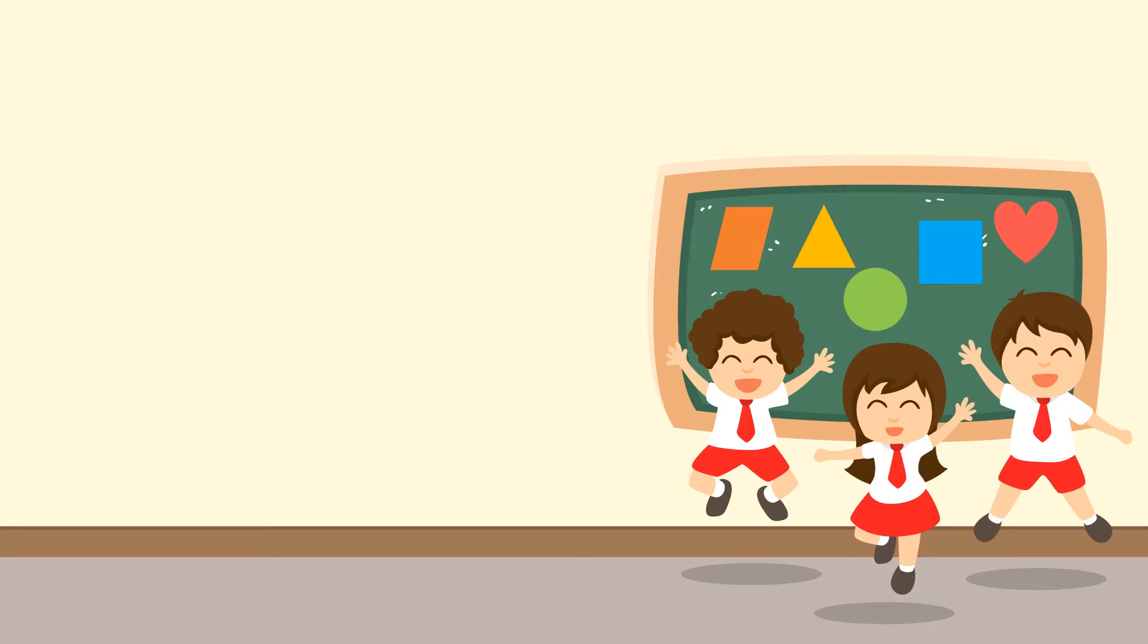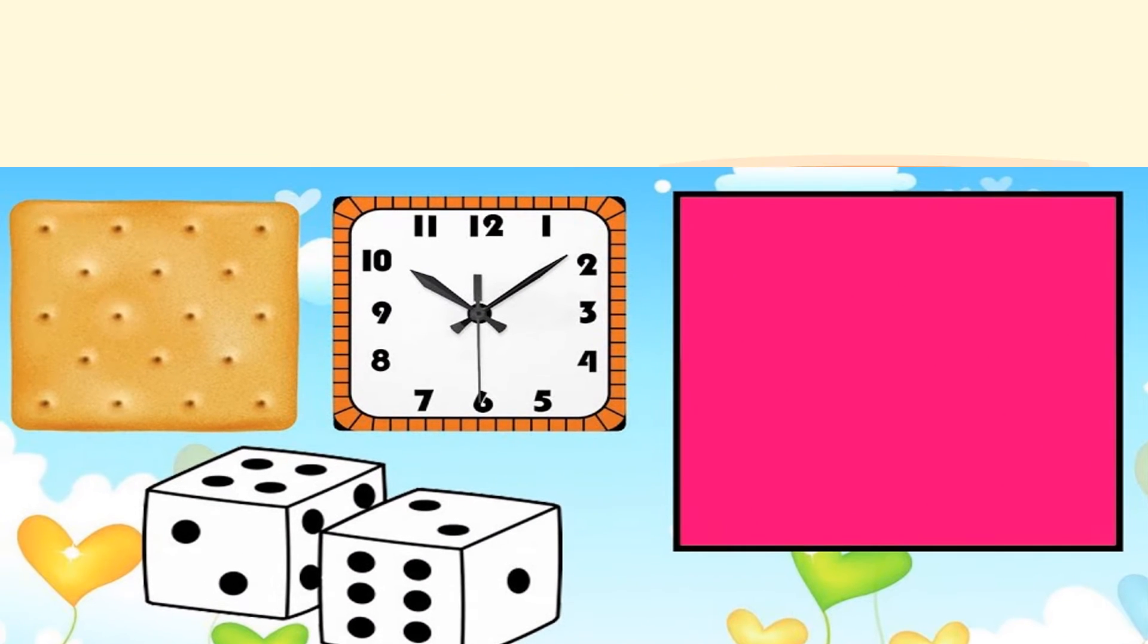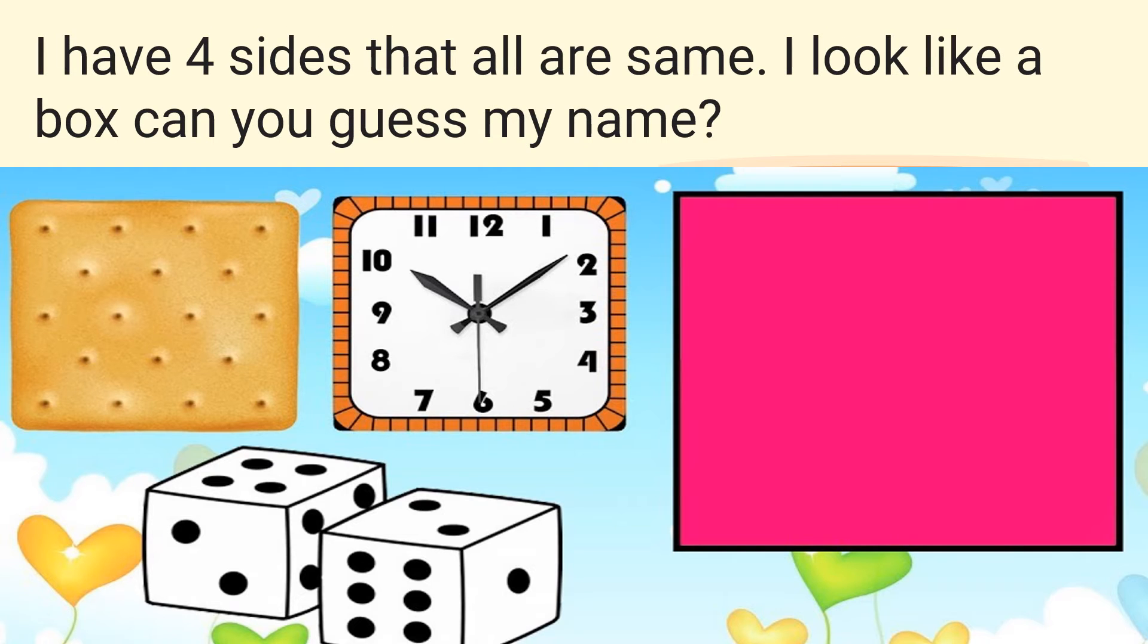Let's start. First of all can you guess these shapes? Yes a clock, a box, a biscuit. I will give you a hint. I have four sides that all are same. I look like a box. Can you guess my name?